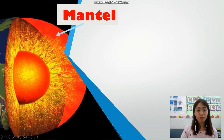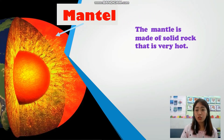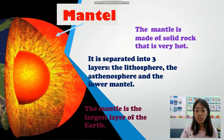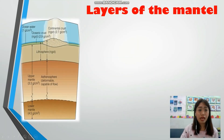Now let's continue with mantle. The mantle is made of solid rock that is very hot. It is separated into three layers: the lithosphere, the asthenosphere, and the lower mantle. The mantle is the largest layer of the earth.